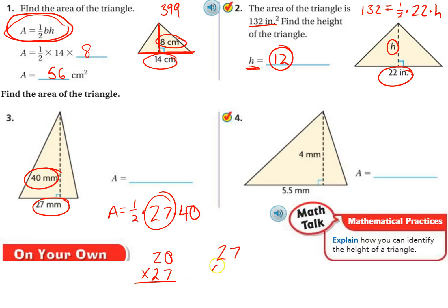Another way I can do this is 27 times 20 this way. And then I know I just need to double the 27, which is going to be 54. And then add my 0. So, 540 and it's millimeters squared because I'm finding area.